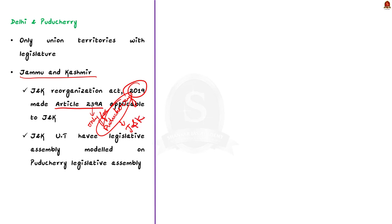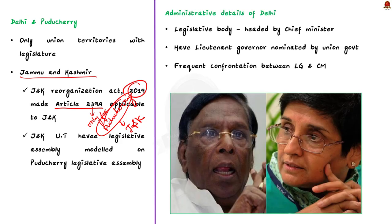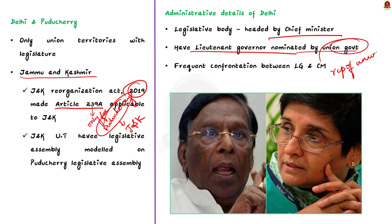Delhi has a legislative body headed by a Chief Minister and an executive head called the Lieutenant Governor, who is nominated by the Union Government. Since the LG is a representative of the Union, confrontations emerge between the LG and the publicly elected CM. In states, governors have only certain discretionary powers, but for union territories the LG is provided with huge powers — this is why conflicts emerge. This was also the case in Puducherry when former IPS officer Kiran Bedi was made Lieutenant Governor.